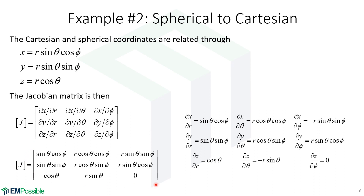And that's really it. The algebra and taking these derivatives might get a little complicated for certain transforms, but it's truly a straightforward process to construct the Jacobian.